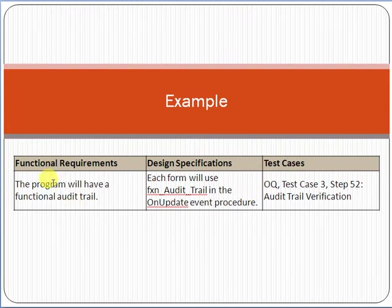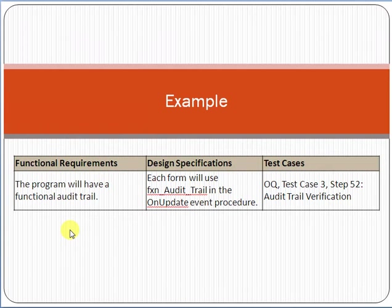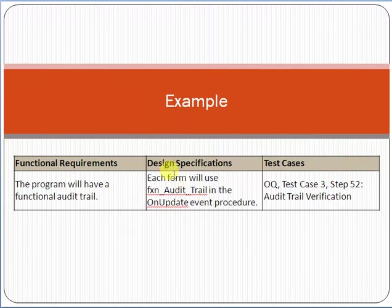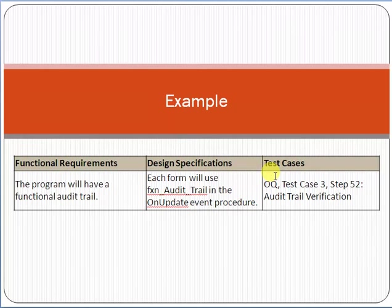Let me give you a simple example of the Requirement Traceability Matrix. Assume there is a functional requirement: the program will have an audit trail function. Audit trail means there should be a log of who approved the request, who rejected the request, who used the option and at what time. This is the functional requirement. The design specification then says each form will use the audit trail in the on-update event procedures — note that the design specification is more technical than the functional requirement. Then Test Case 3, Step 52 covers audit trail verification.